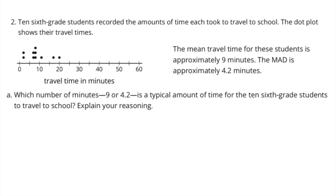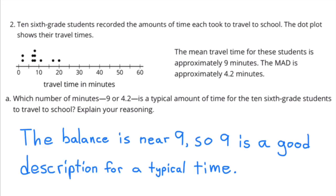The dot plot shows their travel times. The mean travel time for these students is approximately nine minutes, and the MAD is approximately 4.2 minutes. Part a: Which number — nine or 4.2 — is a typical amount of time for the ten sixth-grade students to travel to school? The balance point is near nine, so nine is a good description of a typical travel time from this data set.